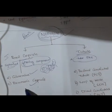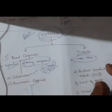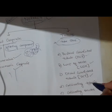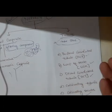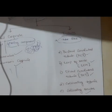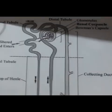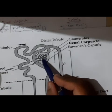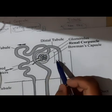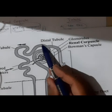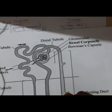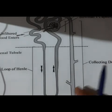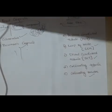From Bowman's capsule you get the tubule structure. The tubules include the proximal convoluted tubule, the loop of Henle, the distal convoluted tubule, the collecting tubules, and the collecting ducts, which later lead to the renal pelvis, ureter, and urinary bladder. In the structural diagram, you can see the tuft of capillaries called the glomerulus surrounded by the Bowman's capsule, followed by the proximal convoluted tubule, loop of Henle, distal convoluted tubule, and collecting ducts through which fluids move.